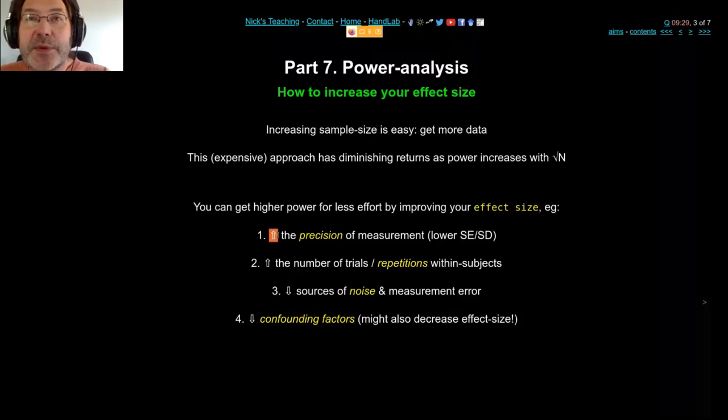To double your power, you need to quadruple your sample size. So instead of increasing the sample, you can increase the effect size. You can do that by increasing the precision of measurement. Maybe you've got a better piece of equipment with lower noise, or you've got calipers which are more precise, or you've got a better weighing scale, or you can measure the drugs more precisely. Anything you can do to increase the precision of measurement should lower your variability and therefore increase your effect size.